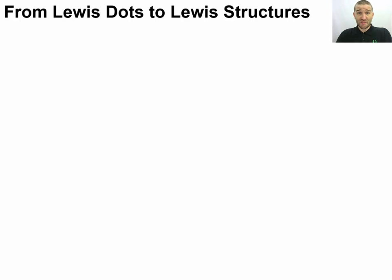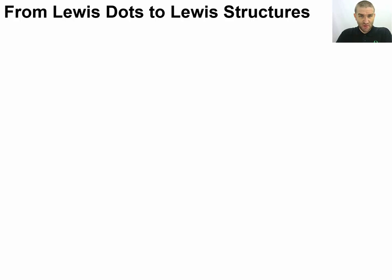Previously we've done our Lewis dots and Lewis dot structures where we did a single atom and figured out where the electrons would be around it. But now we're going to start stitching atoms together to build entire Lewis structures — Lewis dot structures for a molecule or a polyatomic ion.